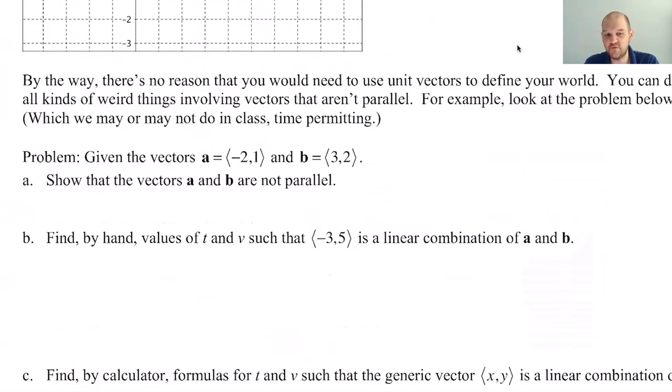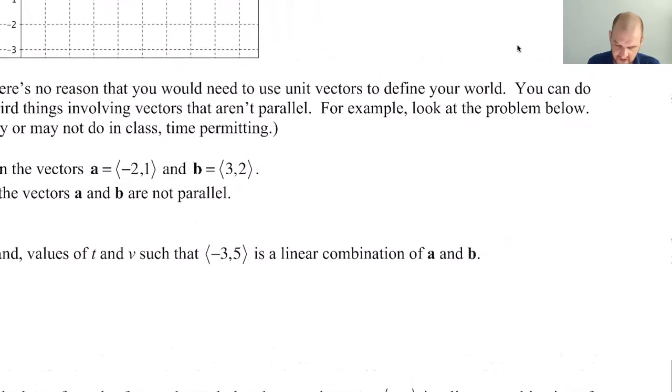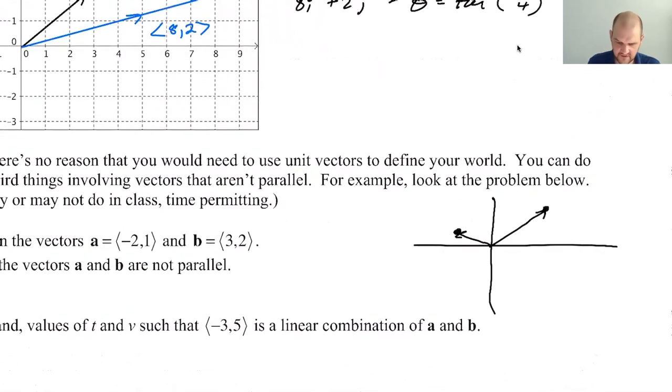You can do this process with any weird things. So what I'm going to do now is instead of using i and j, instead of using 1, 0 and 0, 1, I'm going to use negative 2, 1 and 3, 2. I don't know why I would do that. I have decided that I would like the grid on which I graph everything. So negative 2, 1 is like this. And then 3, 2 is going to be like this.